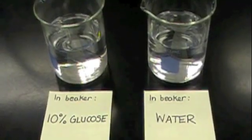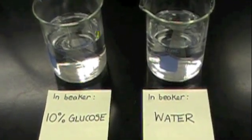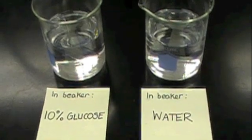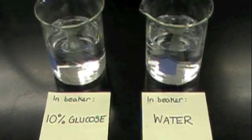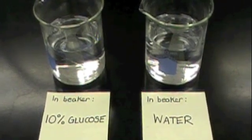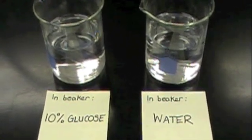We're going to put the dialysis tube that contains water into a beaker where it will be surrounded by 10% glucose solution. Conversely, we'll put the dialysis tube that contains glucose into the beaker where it will be surrounded by water.